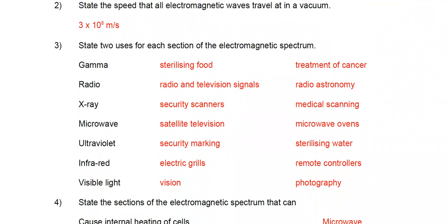Gamma: sterilizing food or the treatment of cancer. Radio: radio and television signals and radio astronomy. X-ray: security scanners and medical scanning. Microwaves: satellite television and microwave ovens.